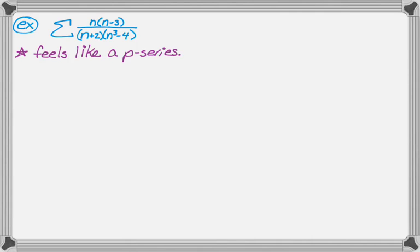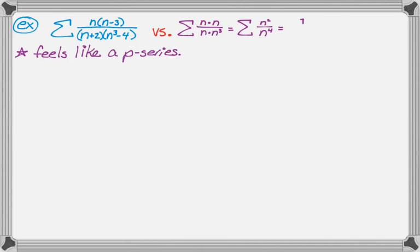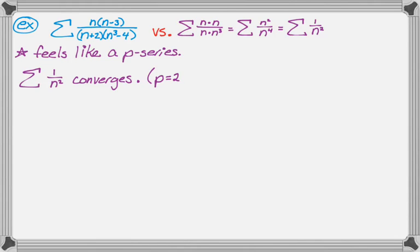What I'm going to do is construct my own series by looking at what it really should have been. The first n is fine, but n minus 3 — I'd rather that just be n. And n plus 2 would be easier as just n. And n cubed minus 4 — subtracting 4 from n cubed doesn't make a difference as n gets huge, so I'll just use n cubed. This simplifies to n² over n⁴, which is 1 over n². That's a p-series and it converges since p equals 2, which is greater than 1.